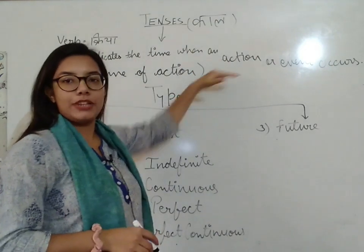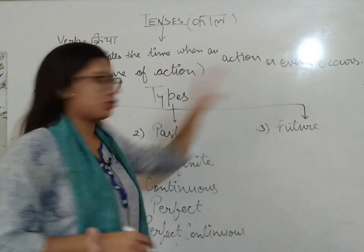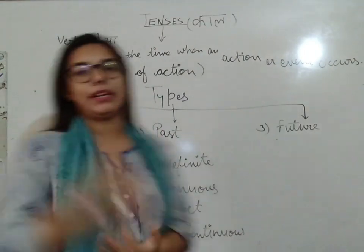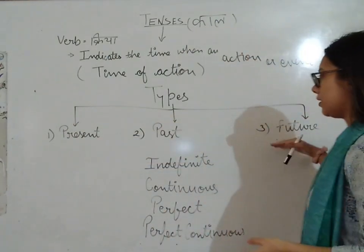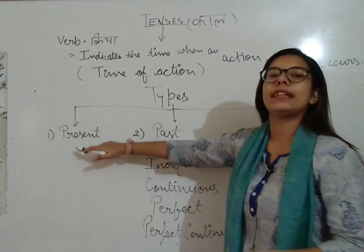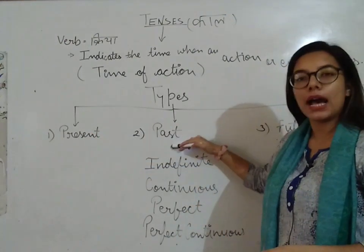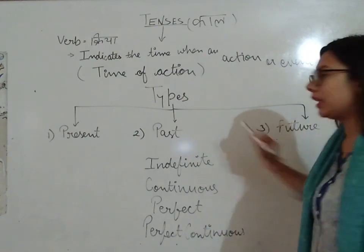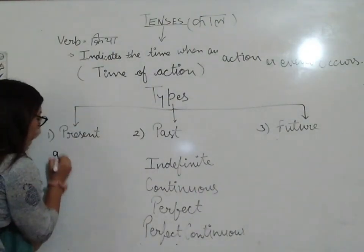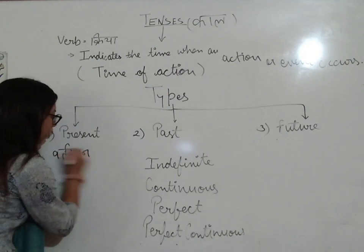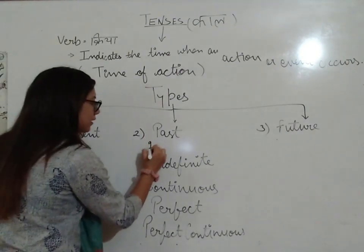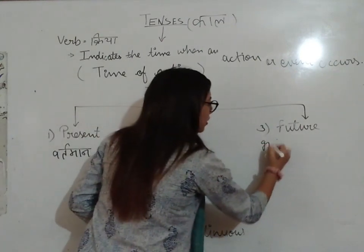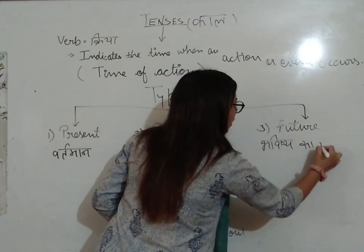Now, types of tenses. How many types of tenses are there? There are three types of tenses. The first one is present tense, the second one is past tense, and the third one is future tense. Present tense means vartman kaal, past tense means bhoot kaal, and future tense means bhavishya kaal.